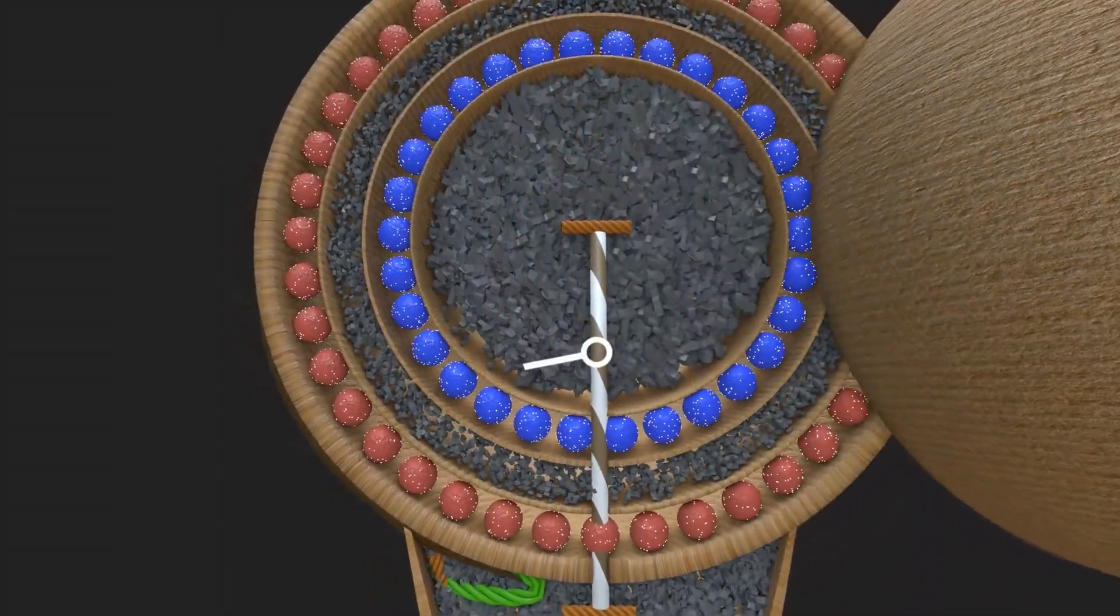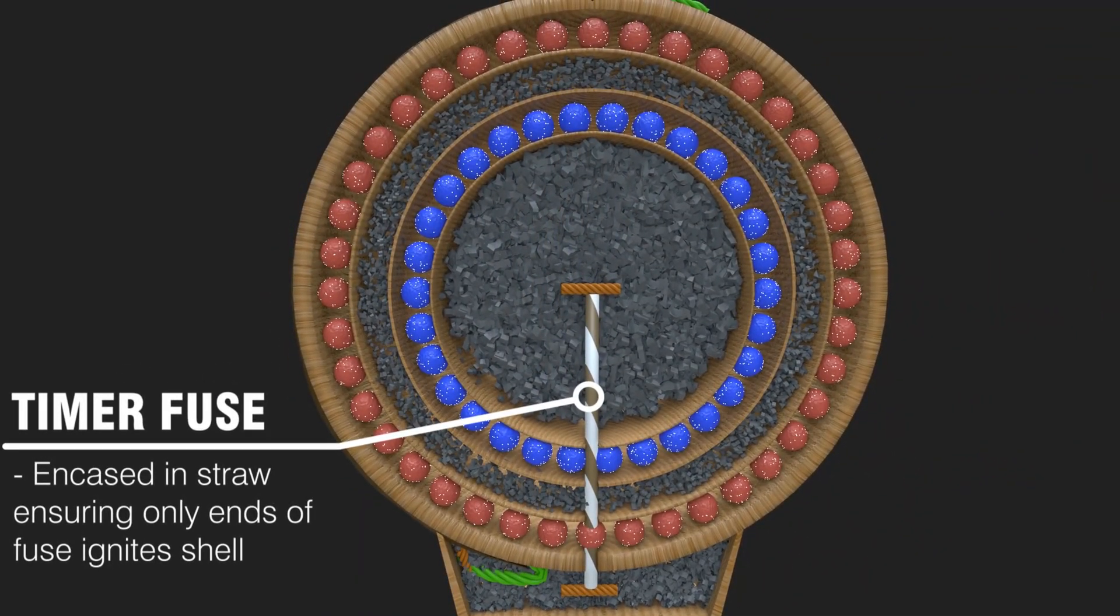A straw encompasses the timer fuse, which guarantees only the center of the shell is ignited, providing a controlled and uniform explosion. The longer the timer fuse takes to burn, the higher the shell will travel.